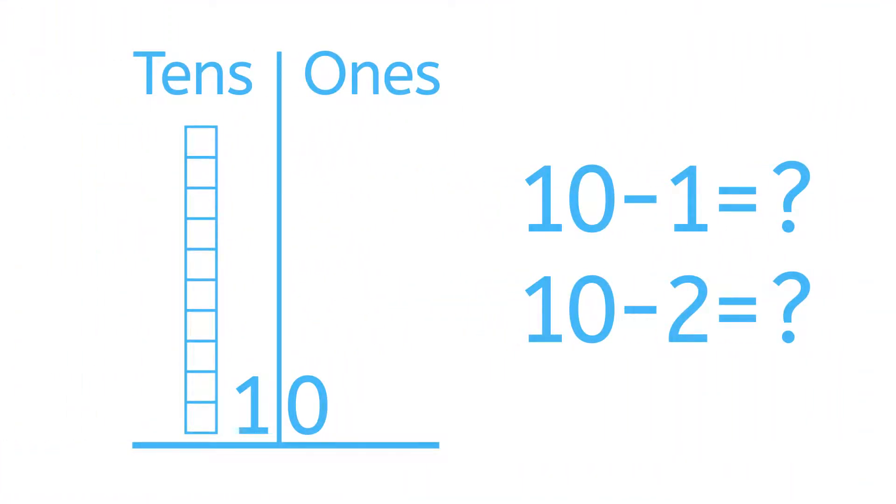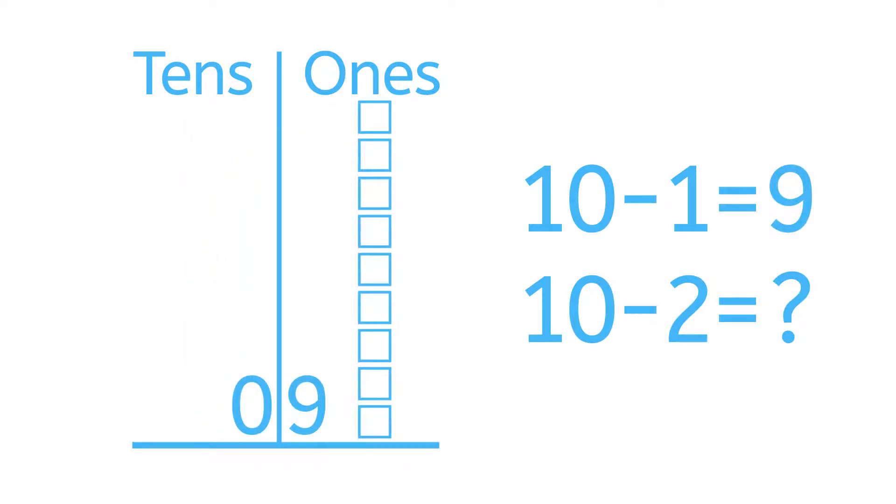When you're working with subtraction problems under 10, you may find it easy to think of some objects, such as blocks. Here you can see our set of 10 blocks. Take away one block and now you have nine. What happens if you take away two?